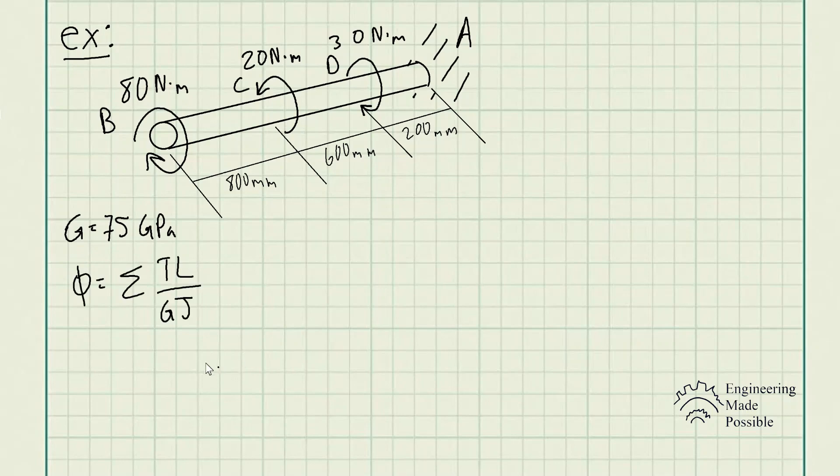And so this is the equation that we're going to be using for the angle of twist: φ equals the sum of the torque times the length divided by the shear modulus and the polar moment of inertia. And the torque is at every specific point along the shaft that a torque is being applied to.